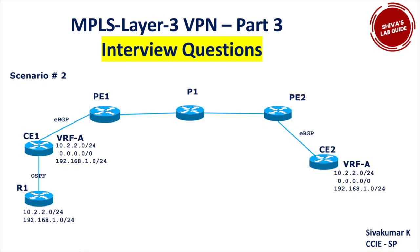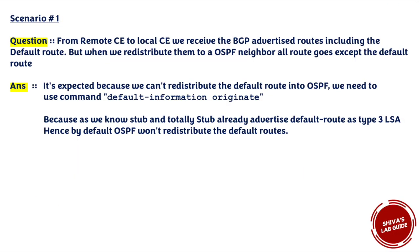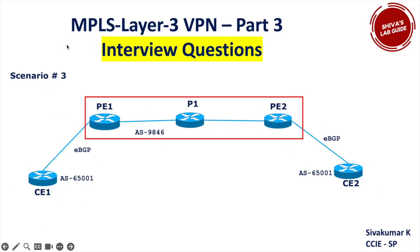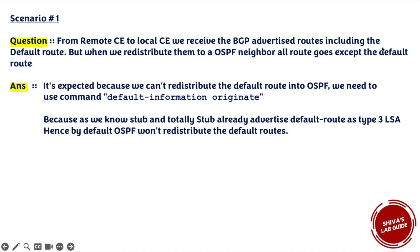The answer for scenario two: from the remote CE to the local CE, we receive BGP routes including the default route, but when we redistribute them into OSPF all routes go through except the default route. This is expected behavior — you cannot redistribute a default route into OSPF directly. To redistribute a default route into OSPF you need the command 'default-information originate'. OSPF is designed this way because stub and totally-stub areas already use a default route as a Type 3 LSA, so by default OSPF won't redistribute default routes.